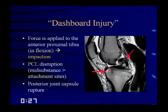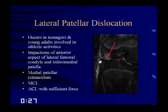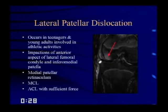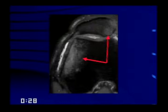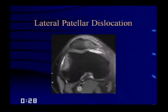Lateral patellar dislocations occur in teenagers and young adults in athletic activities. You'll get impactions of the anterior aspect of the lateral femoral condyle and the inferomedial patella. You can get tears of the medial patellar retinaculum, MCL, and even ACL with sufficient force. If you see a lateral femoral contusion without the usual lateral tibial contusion associated with ACL tears, look carefully at the patella — you'll see the lateral femoral contusion and the medial patellar contusion, the footprint for a lateral patellar dislocation.